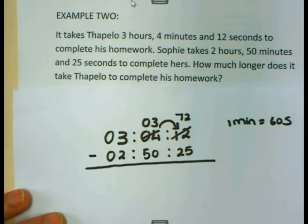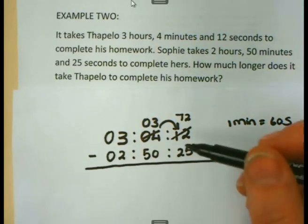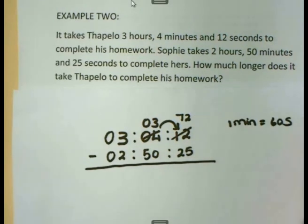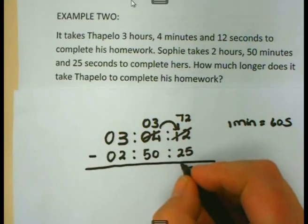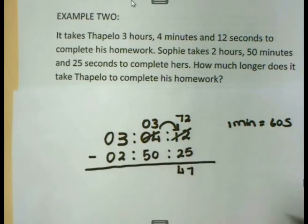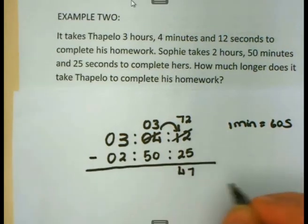If I subtract now 25 from 72, what will I get? You can work it on your calculator, or you can do it manually, where I say 5 from 2 cannot, 5 from 12 is 7, and now 2 from 6 is 4. But use your calculator.